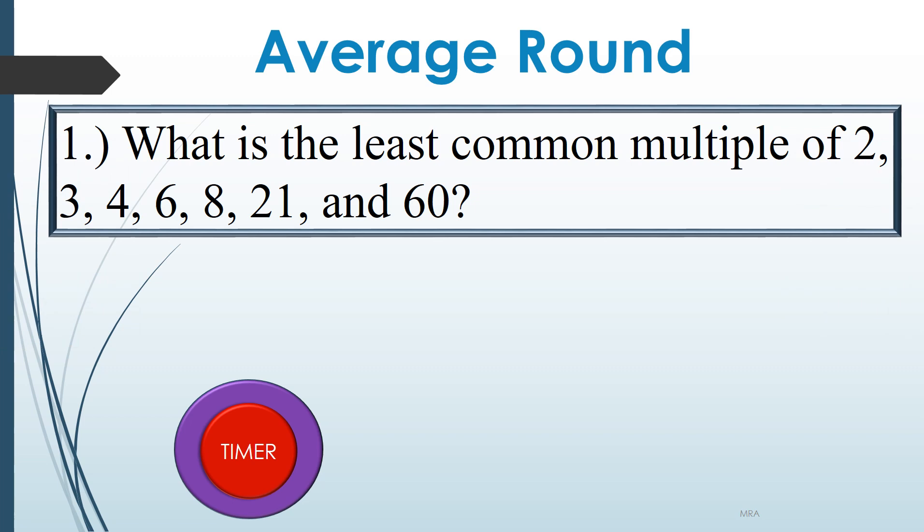What is the least common multiple of 2, 3, 4, 6, 8, 21, and 60?